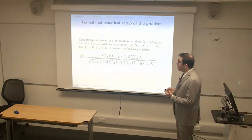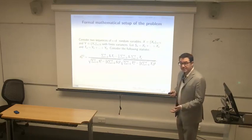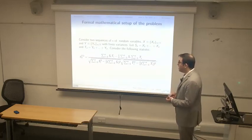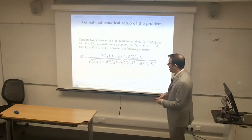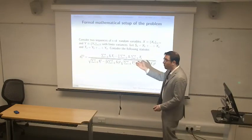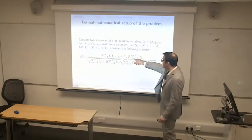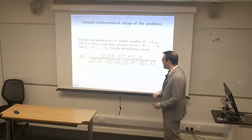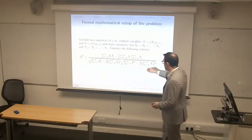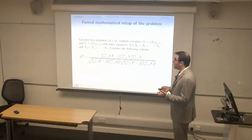The formal mathematical setup of Yule's nonsense correlation begins with the definition of empirical correlation. Consider two sequences of IID random variables x and y with finite variances. Let S_N be the partial sum of the first sequence and T_N the partial sum of the second. The statistic theta_N^1, where N is the sample size, is the empirical correlation: the sum of S_i T_i minus (1/N) times the sum of S_i times the sum of T_j — this is a covariance — divided by the standard deviations of each part.